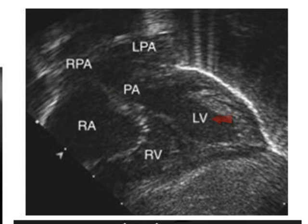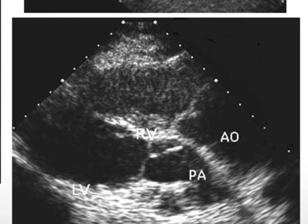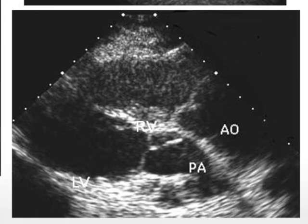The immediate bifurcation of this great vessel into the branch pulmonary arteries — labeled RPA and LPA for right and left pulmonary artery respectively — differentiates it from the aorta, which branches more distally from the heart. The bottom right image shows an echocardiogram demonstrating the pulmonary artery arising from the left ventricle and the aorta arising from the right ventricle, giving a visualization of the parallel nature of the great vessels and reflecting the parallel circulation in this disease.